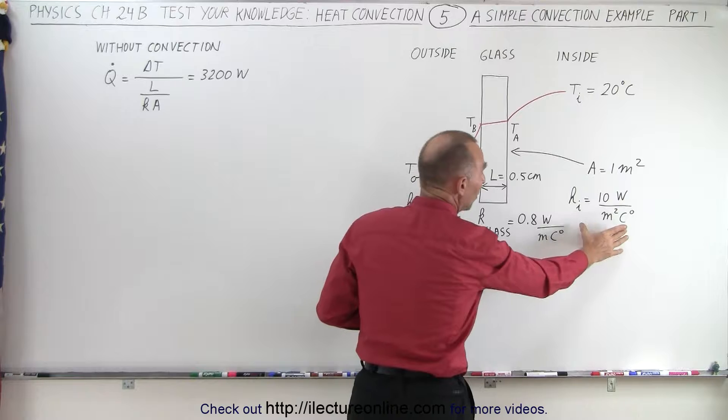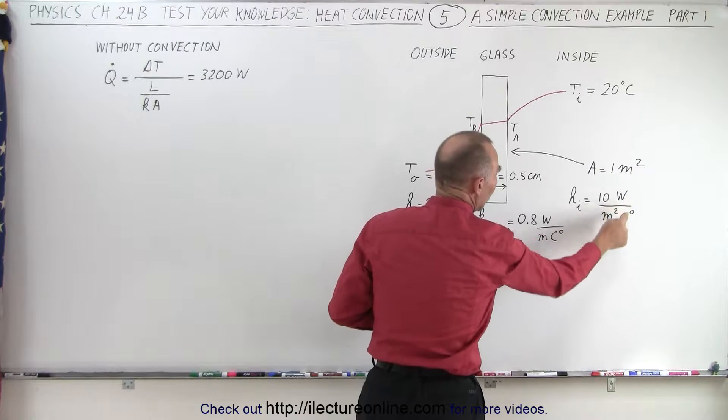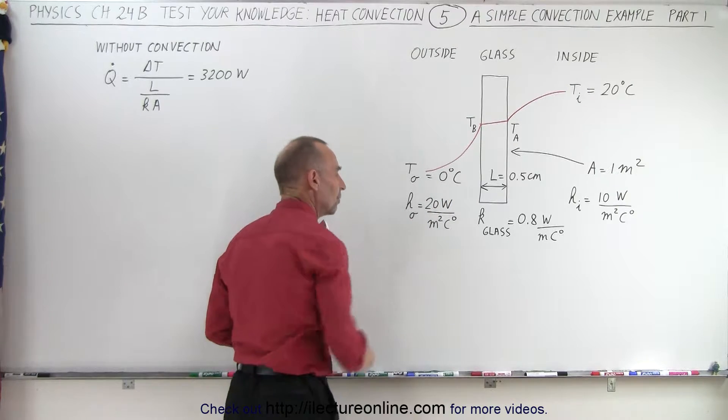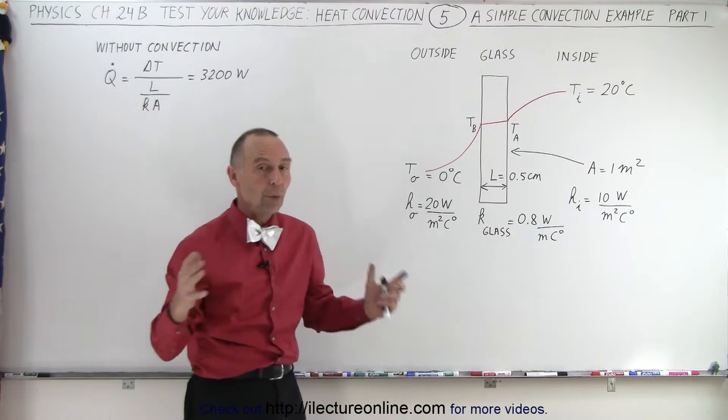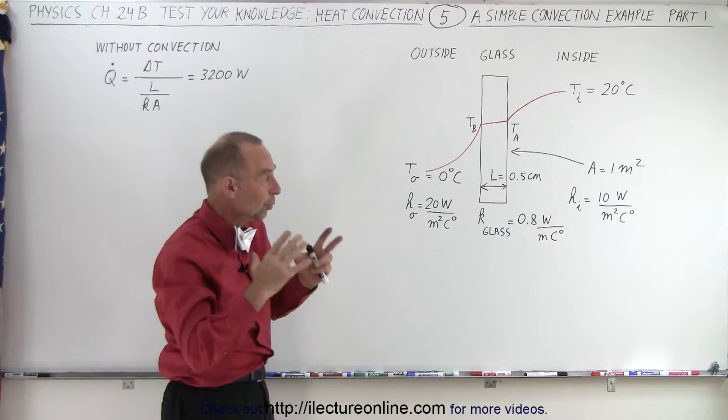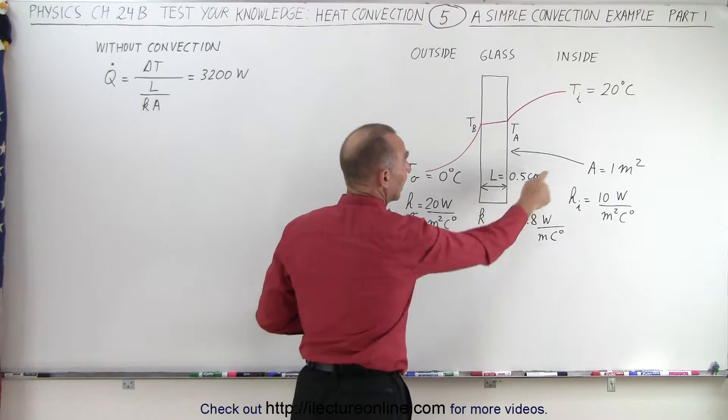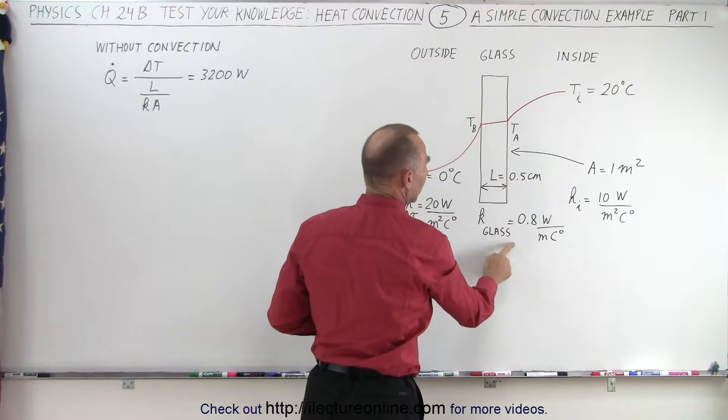Let's say that on the inside it's 10 watts per square meter per centigrade degree, and on the outside is 20 watts per square meter per centigrade degree. What will be the heat transfer through our window now? The parameters are the same: half a centimeter wide, still one square meter in area with the same heat conductivity constant.